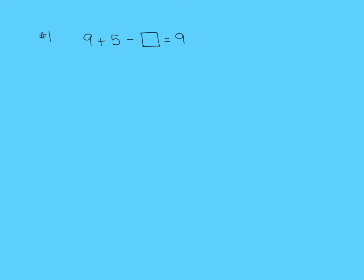For question number one, they're going to get you to fill in the box. So 9 plus 5 minus something equals 9. Well, to get back from 9 plus 5, which is 14, to get back to 9, we need to subtract another group of 5. So that's what you would put in your box.